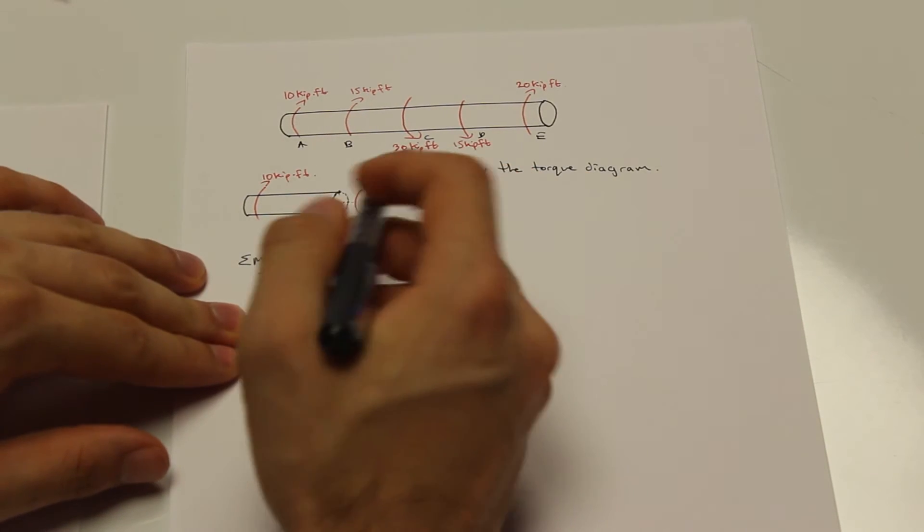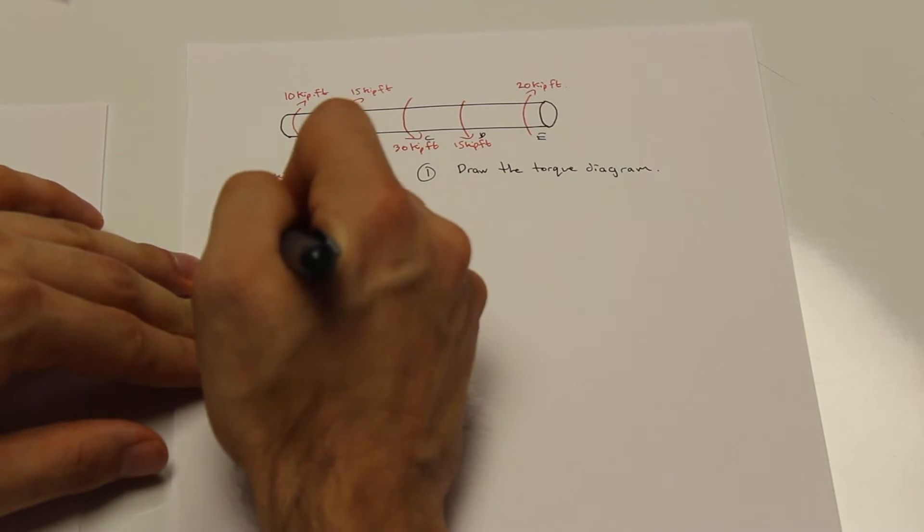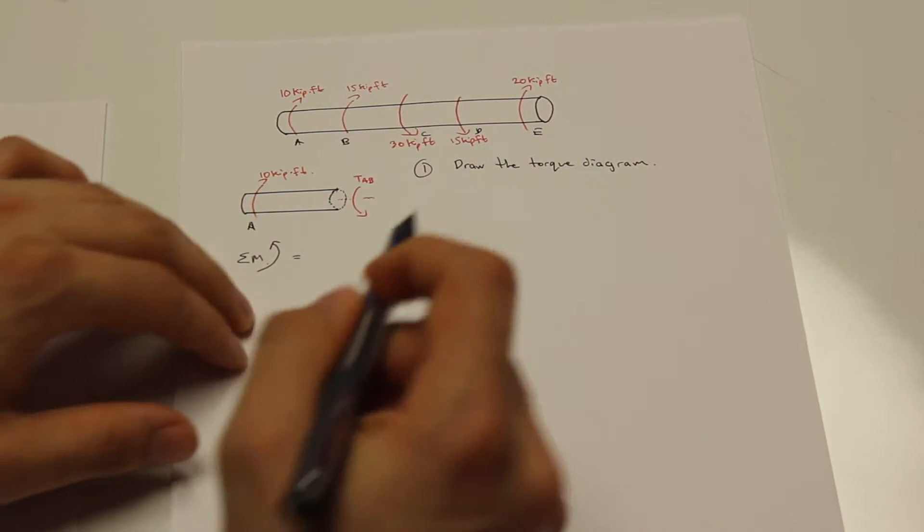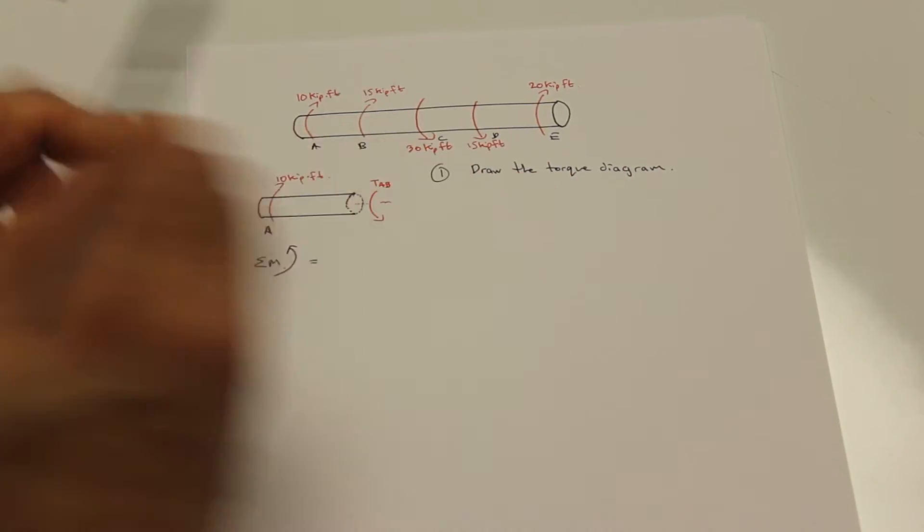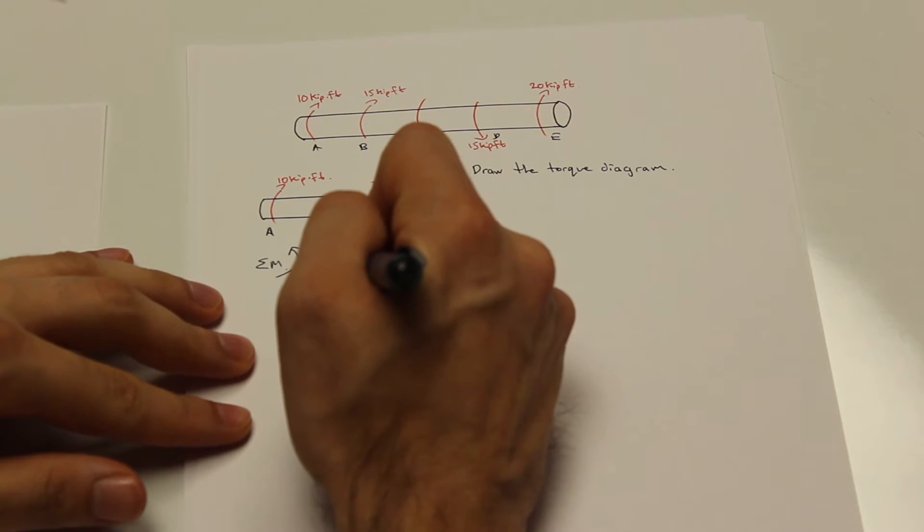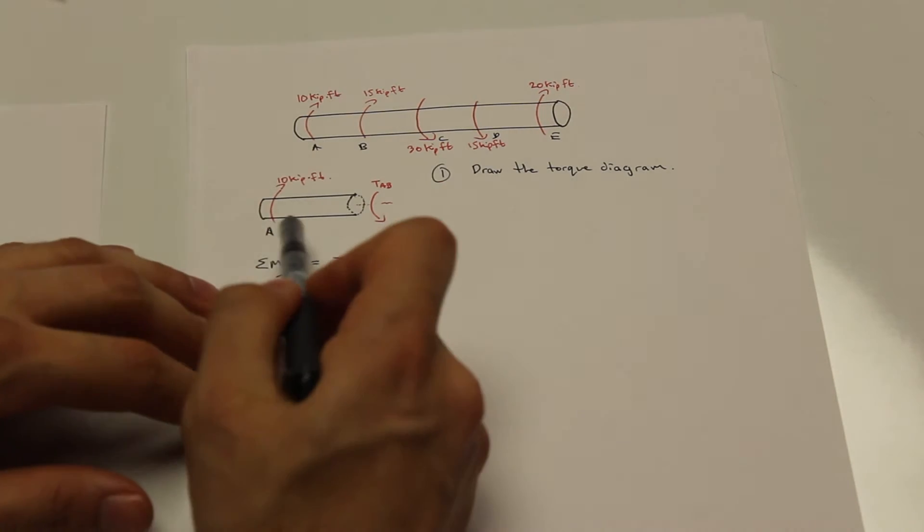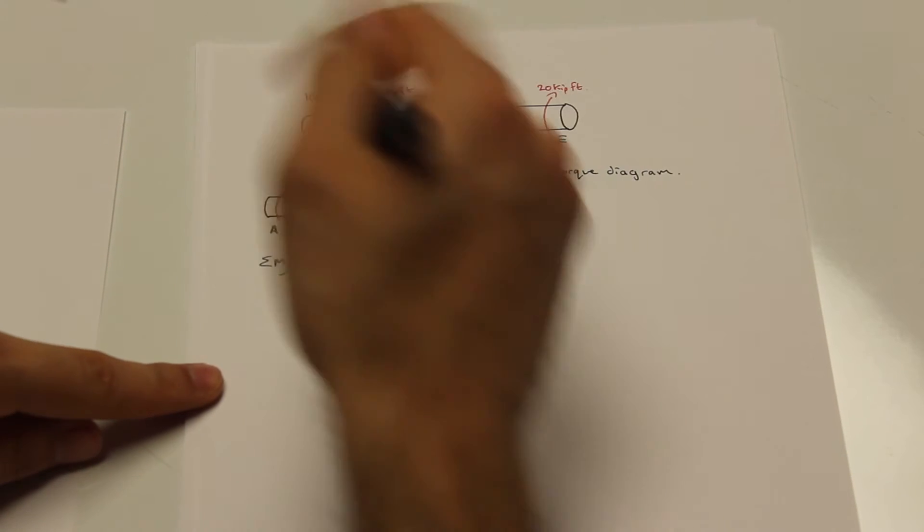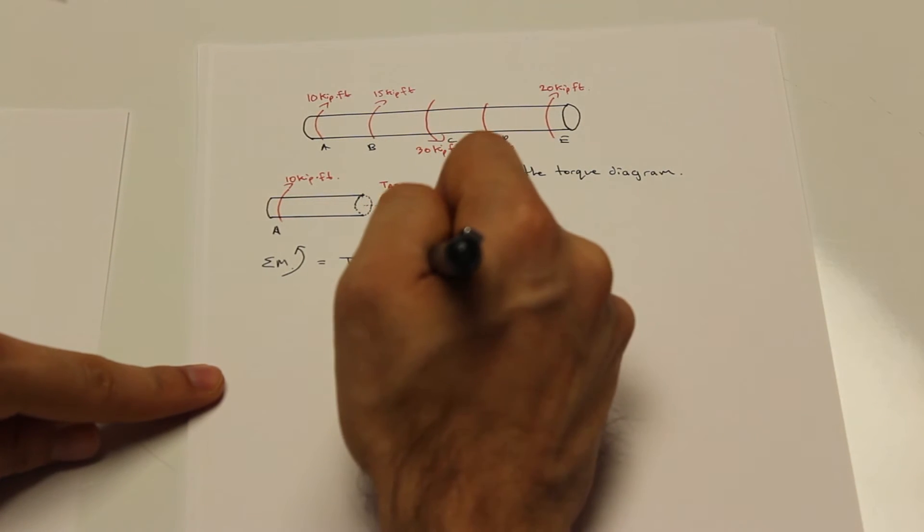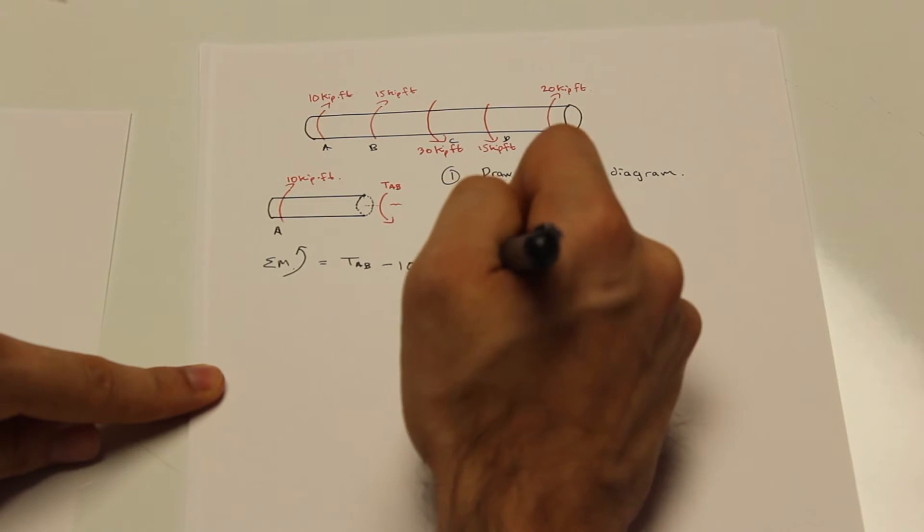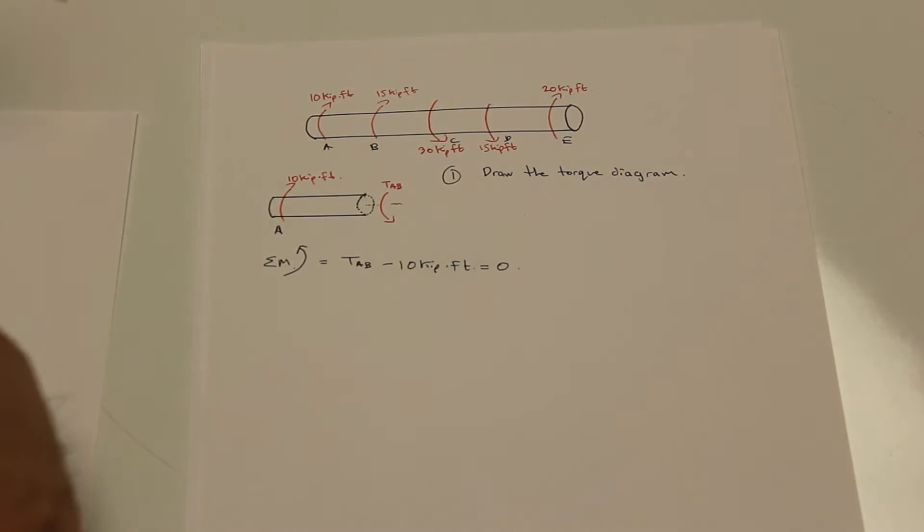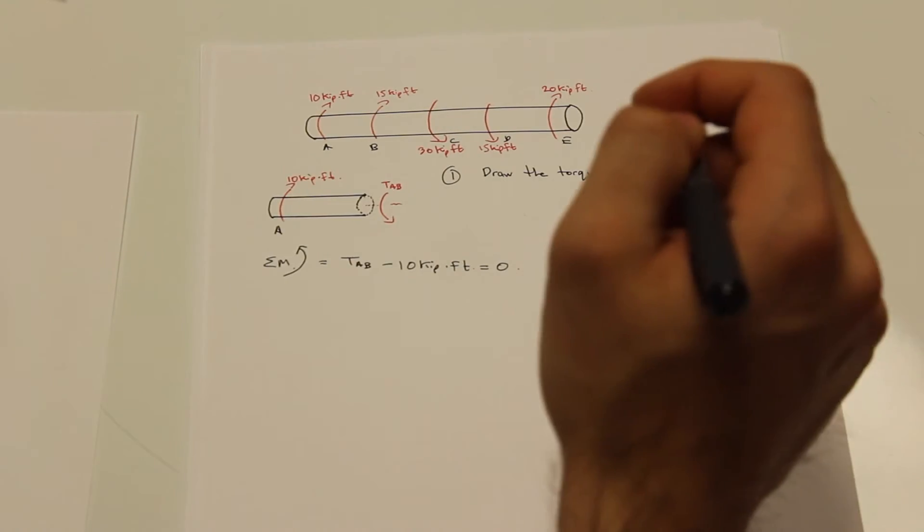So let's begin. Let's find the internal resisting torque from A to B. Now like I said before, TAB in this case is positive. So we're going to write TAB as a positive torque. And we also have 10 kip feet here, and the 10 kip feet is going the other direction. So that's a negative torque. And it's equal to zero obviously, because in everything we do in civil engineering, the shaft can't be moving, otherwise we're in trouble.